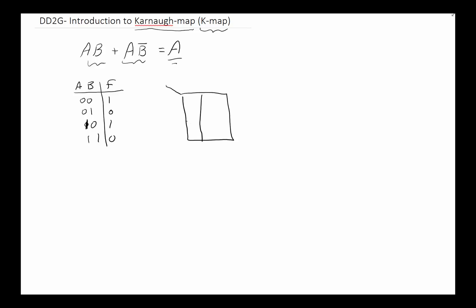In the K-map, we have rows defined by A and columns by B. The first row is A=0, second row A=1; first column B=0, second column B=1. So the top-left cell is A=0, B=0 — that's minterm 0. Top-right is A=0, B=1 — minterm 1. Bottom-left is A=1, B=0 — minterm 2. Bottom-right is A=1, B=1 — minterm 3. All we do is translate the truth table values directly into these cells.